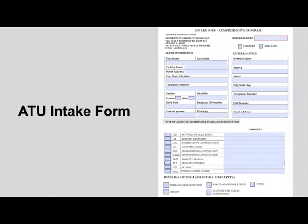The UIC Assistive Technology Unit intake form contains basic information including client information, the type of assistive technology evaluation requested, and the referral source. In the referral source section, please provide the contact information of the case coordinator working directly with the client — not the supervisor or manager. We need the direct contact person so that if we have any questions, we can get to the source quickly and move the process forward.